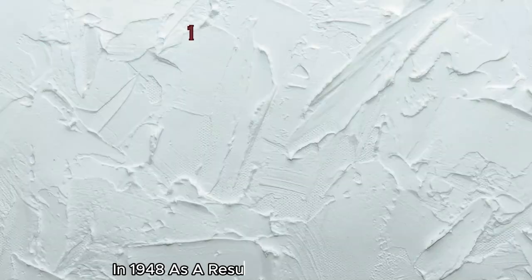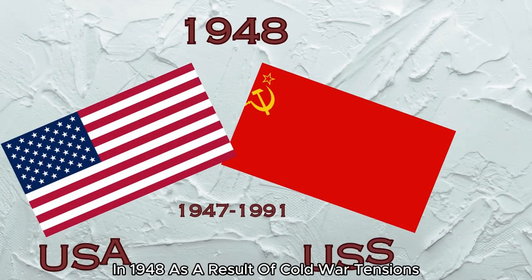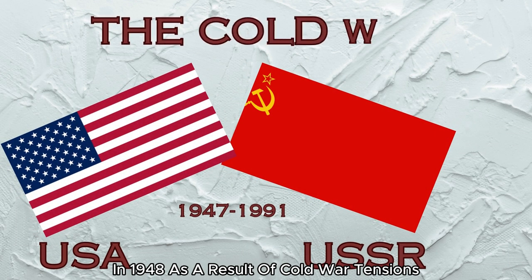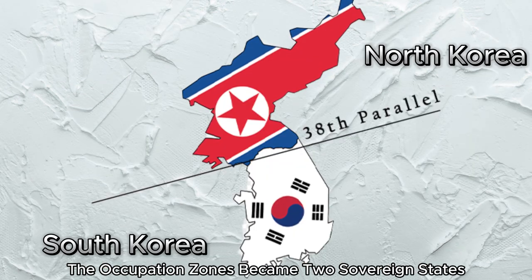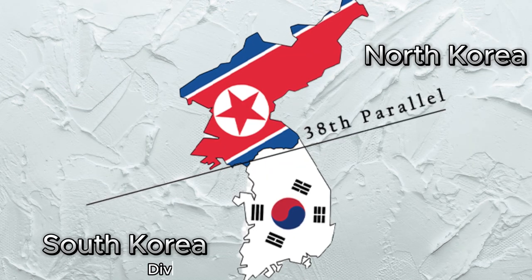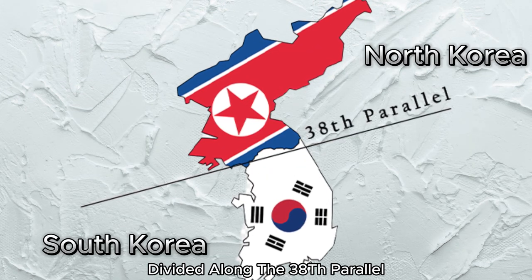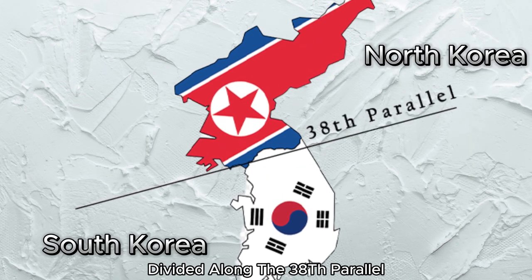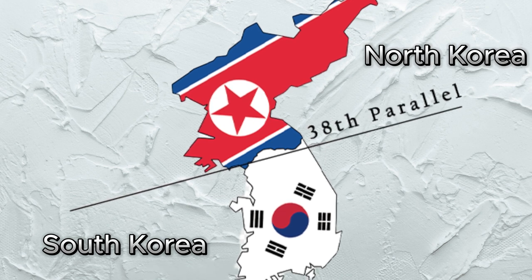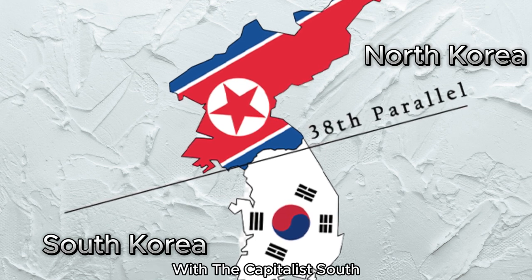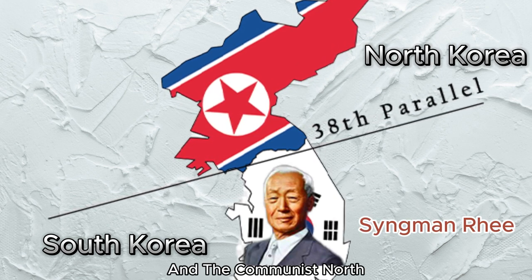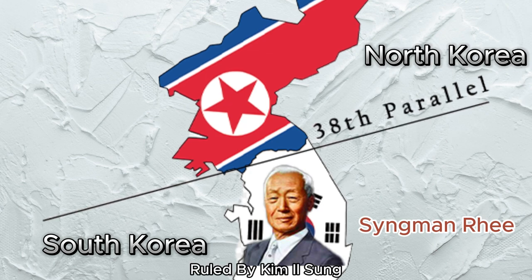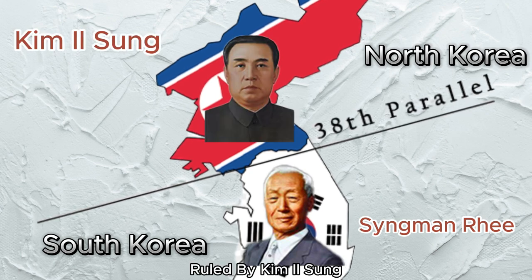In 1948, as a result of Cold War tensions, the occupation zones became two sovereign states divided along the 38th parallel, with the capitalist South ruled by Syngman Rhee and the communist North ruled by Kim Il-sung.